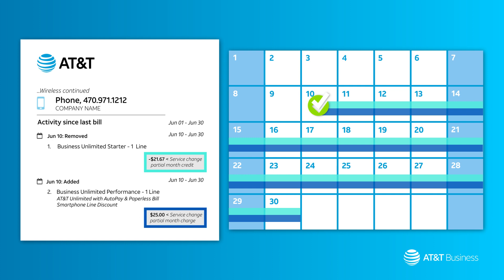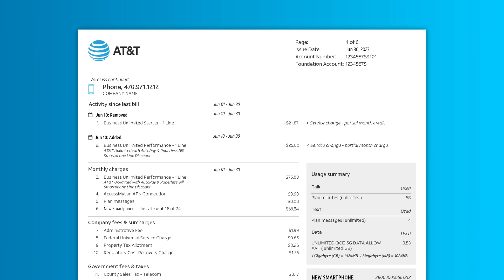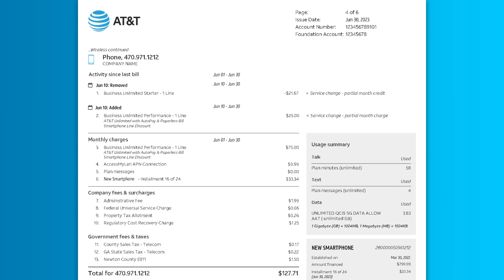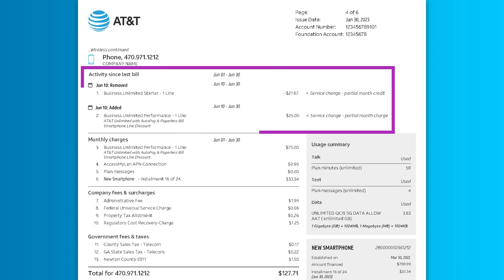We only charge you for the active days a plan or feature was active on your account. Both the credits and charges will appear on your next month's bill as the previous month's charges.